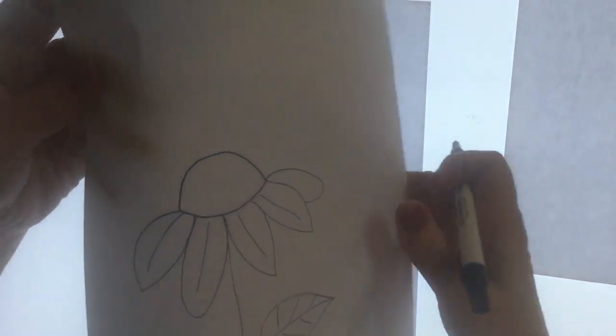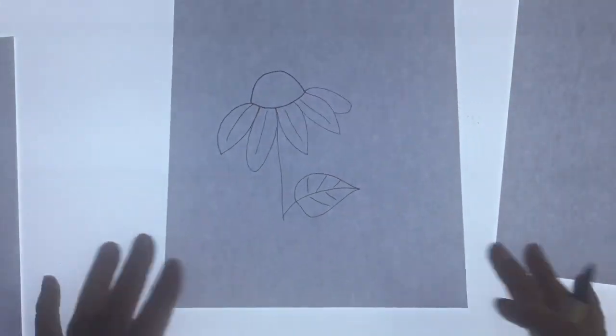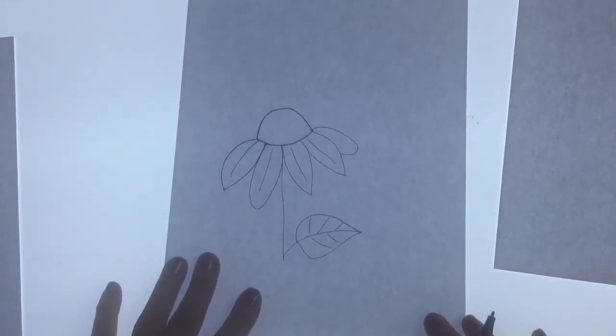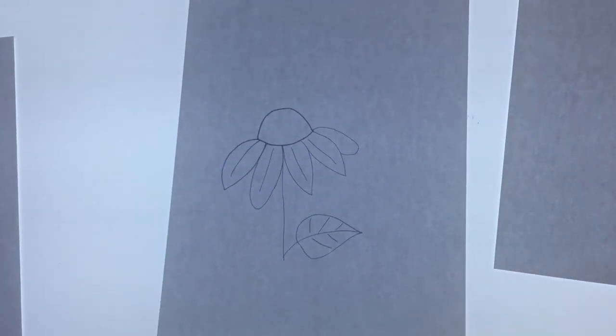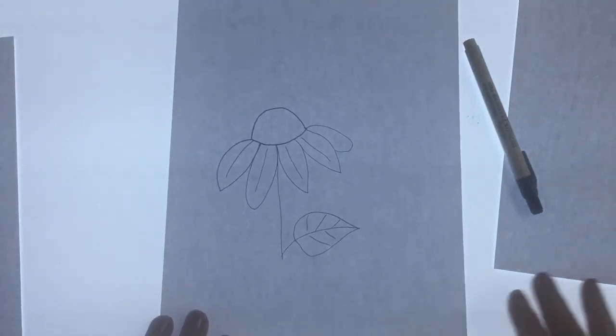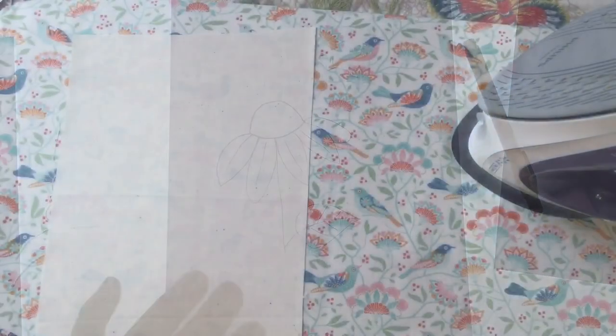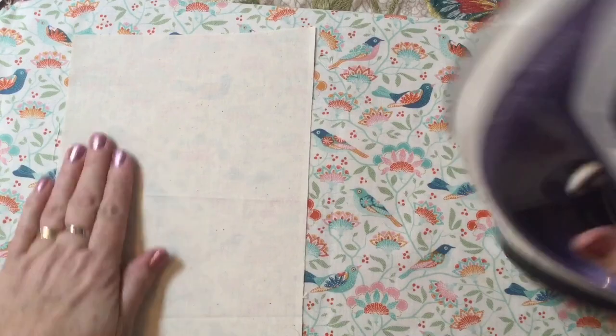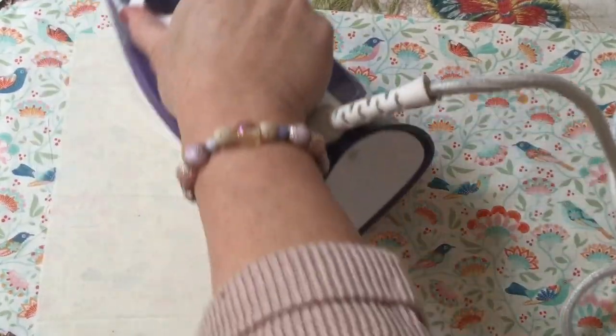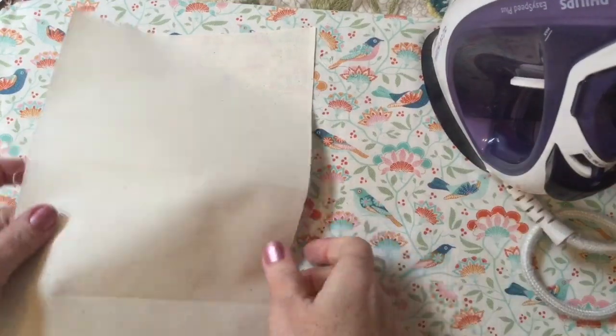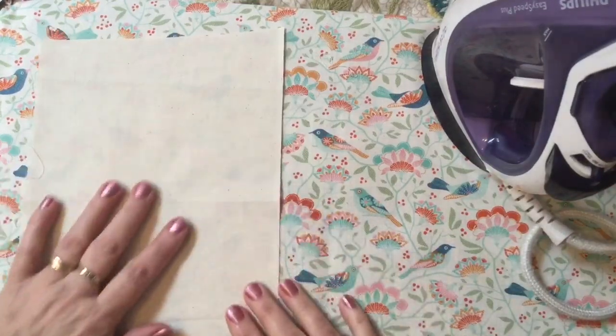So there we go. So this piece of paper is now an iron-on transfer. That's what I've turned it into. So let me take this over to the ironing board and show you what we do next. Okay, so here we are at the ironing board. Now if you haven't watched my iron-on transfer video, my how-to, then I suggest you go and have a look. But I will run through it again here but not in quite as much detail.